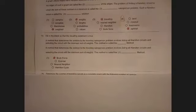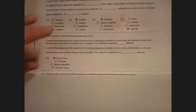Number 75 is another definition. Here this is a method that determines the solution for the traveling salesperson. It involves listing all Hamilton circuits, and that's our brute force method.